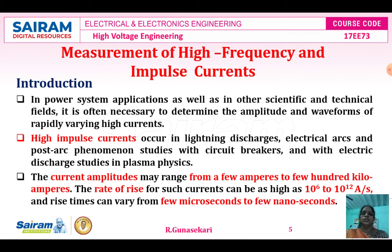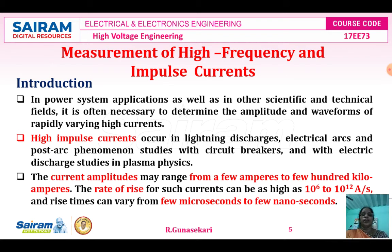The current amplitudes may range from a few amperes to a few hundred kilo amperes. The rate of rise for such currents can be as high as 10 to the power 6 to 10 to the power 12 amperes per second. The rise time is from a few microseconds to a few nanoseconds.